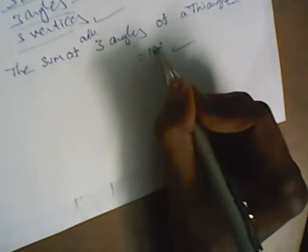A triangle contains three sides, three angles, and three vertices. The major important property is that the sum of all three angles of a triangle must equal 180 degrees. If this property is violated, there is no triangle. The sum of all three angles of a triangle is 180 degrees.